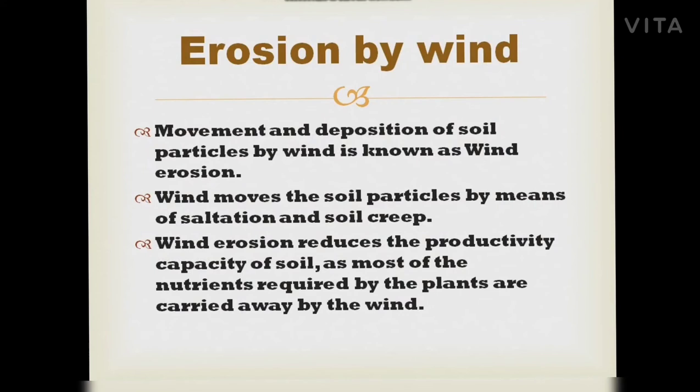Erosion by wind: movement and deposition of soil particles by wind is known as wind erosion. Wind moves soil particles by means of saltation and soil creep. Bouncing and hopping of soil particles is known as saltation, and rolling of soil particles is known as soil creep. Wind erosion reduces the productive capacity of soil as most nutrients required by plants are carried away by the wind.